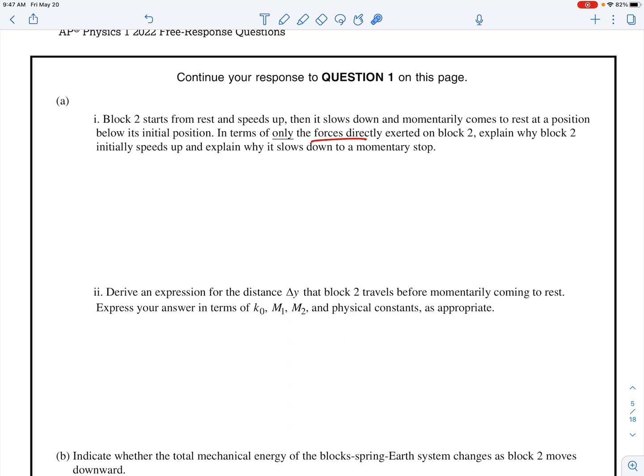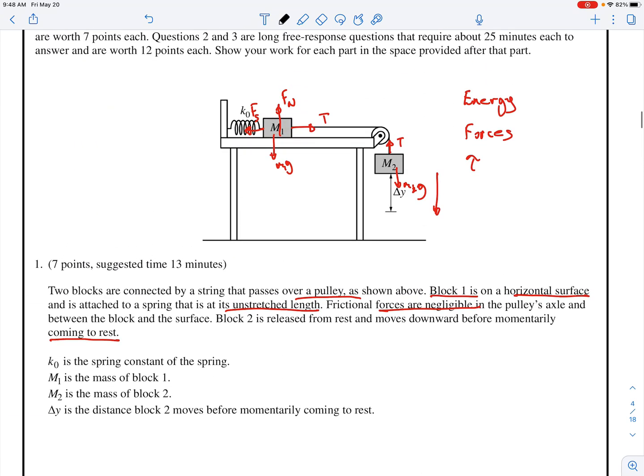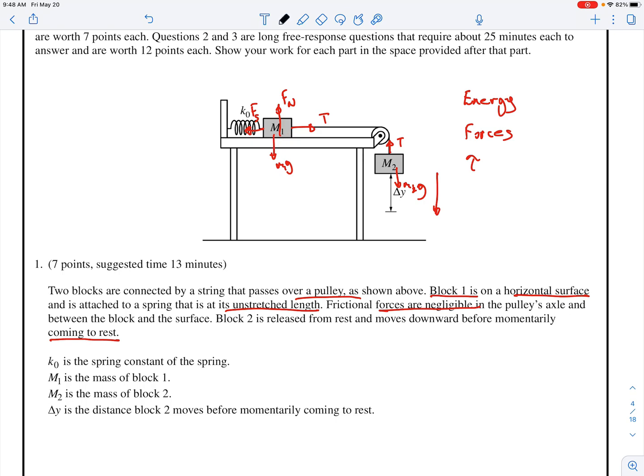So derive an expression for the distance y that block 2 travels before momentarily coming to a rest. Express your answer in terms of K, M1, M2, and physical constants. I'm guessing the pulley is massless. So since they told you it's delta y, then it's just energy. You just check to see what type of energies you have here when it's at its initial position, and what type of energy it's going to have at the final position.